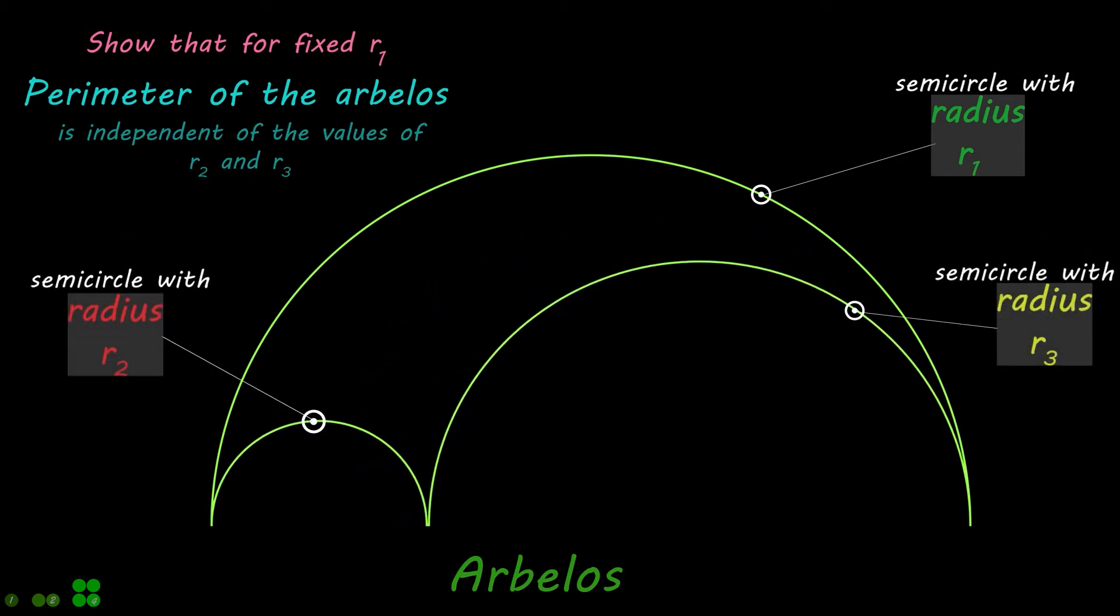Show that for fixed value of radius R1, the perimeter of the Arbelos is independent of the values of R2 and R3.